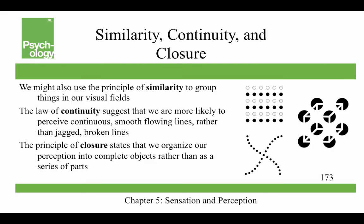The principle of similarity is another way of grouping — you see a line of white and black dots as opposed to a column of alternating colors. The law of continuity suggests we're more likely to perceive continuous smooth flowing lines rather than jagged broken lines. The principle of closure states that we organize our perceptions into complete objects rather than as a series of parts — by putting together a series of circles with cutouts, we can perceive a Necker cube.